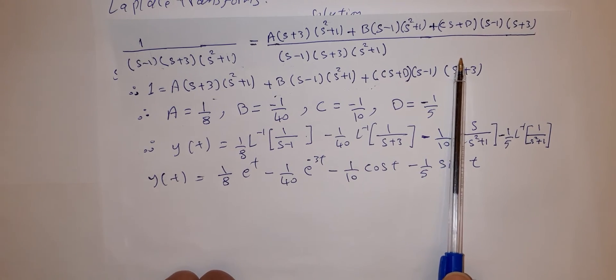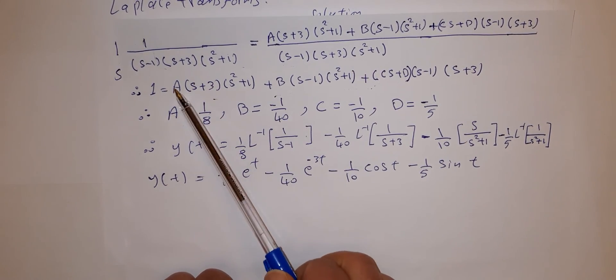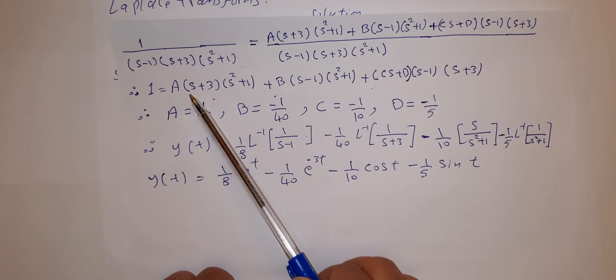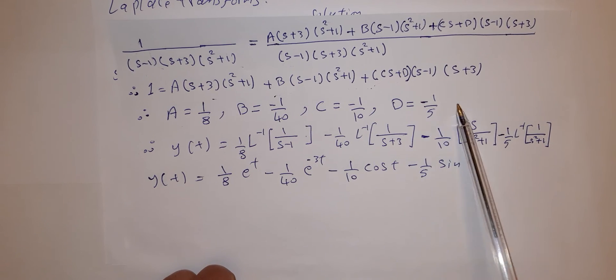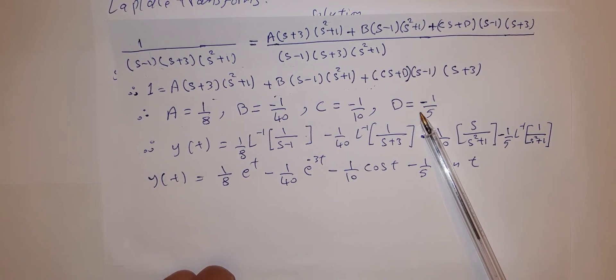You can use random values for s. For example, assume s equals negative 3, assume s equals 1. To get these values, try to do it by yourself as we discussed in the previous lectures.